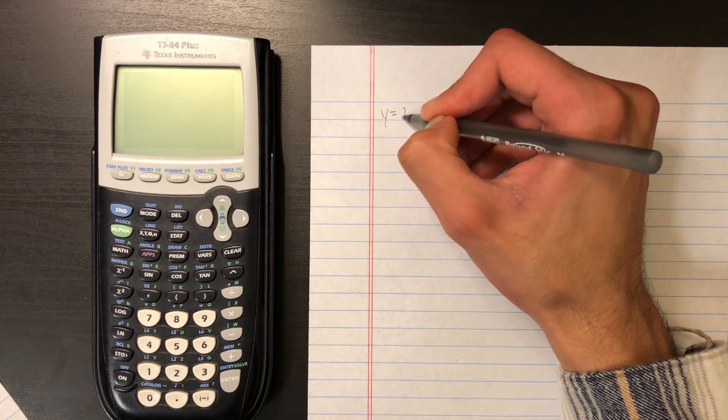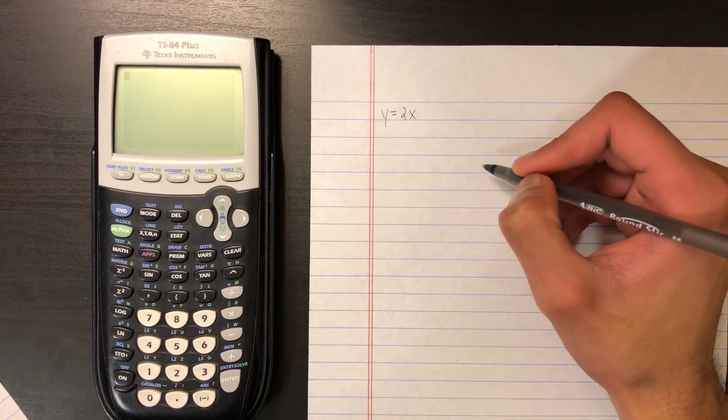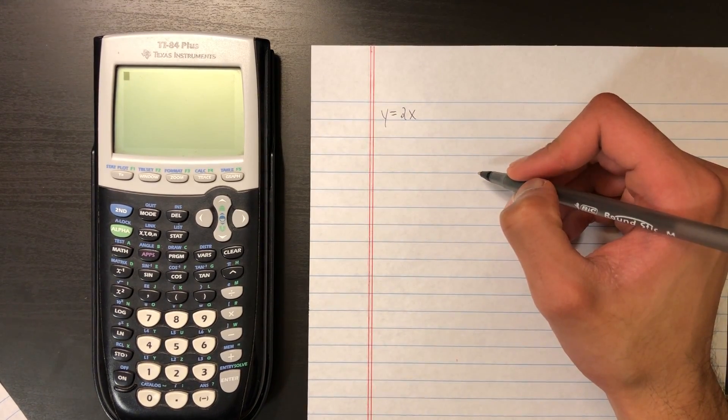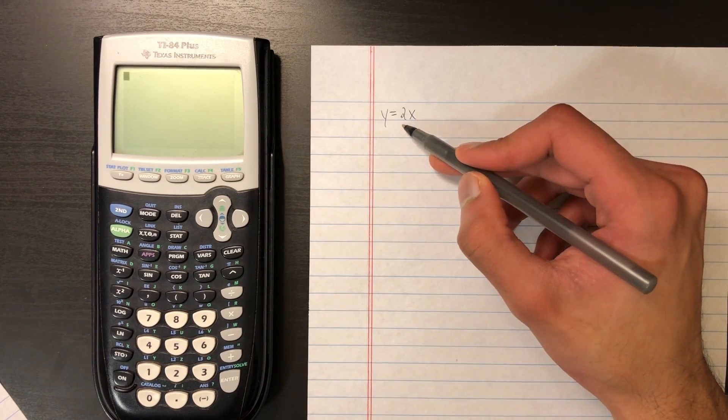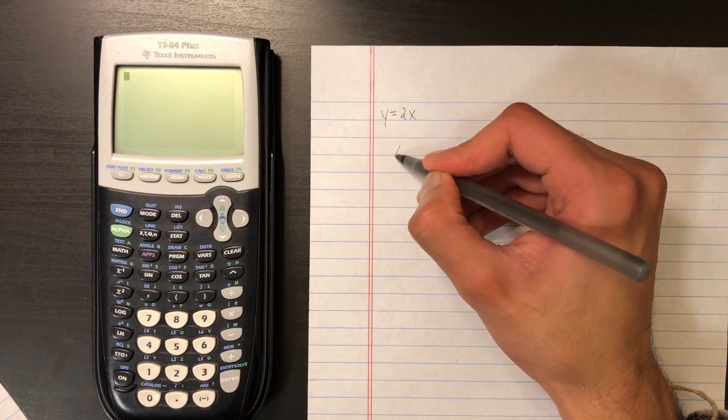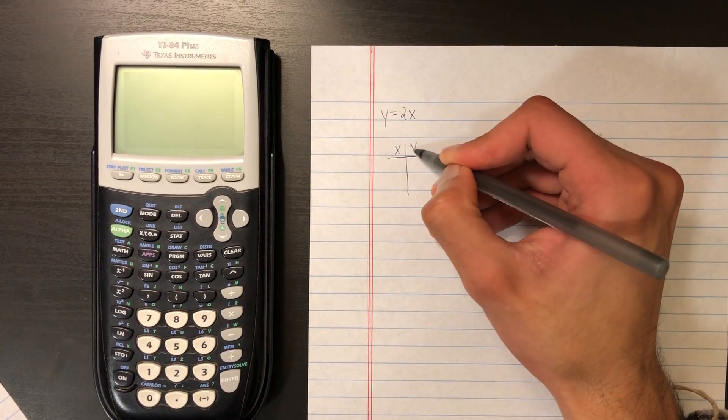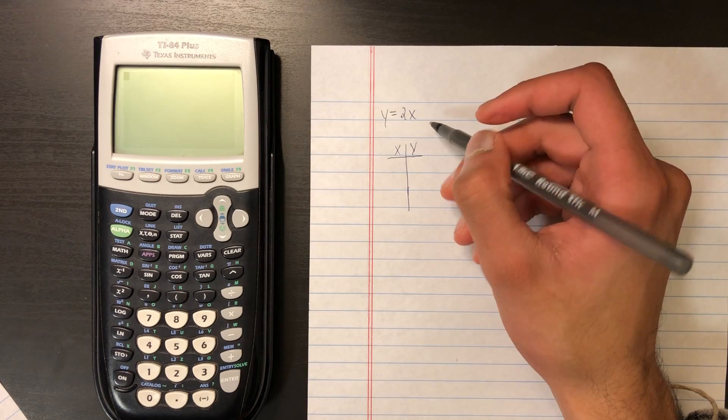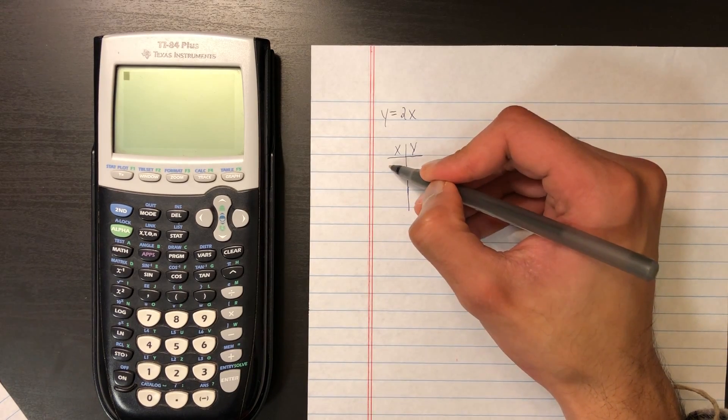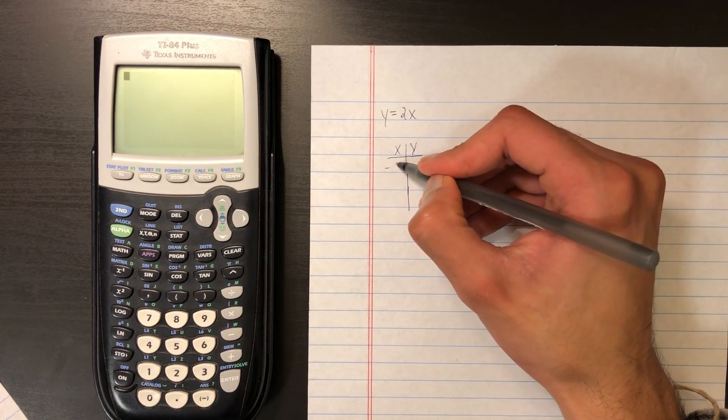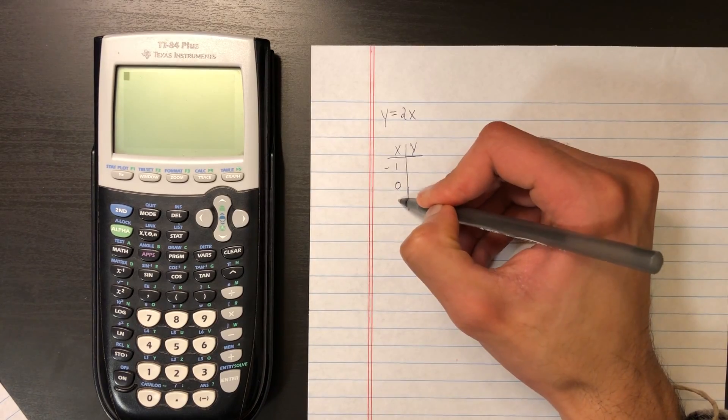y equals 2x. So if we wanted to graph this on paper first, we know our slope here is 2, and then we can create an x, y table to get some more values to help plot our graph. So for the x values, let's use negative 1, 0, and 1.